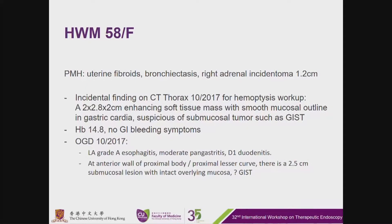This is a 58-year-old lady with a past history of uterine fibroid, bronchitis, and right adrenal incidentaloma. It is an incidental finding on CT for workup of hemoptysis: a 2x2.8x2 cm enhancing soft tissue mass with smooth mucosal outline in the gastric cardia, suspicious of a submucosal tumour such as GIST. Hemoglobin is 14.8 with no GI bleed symptoms.